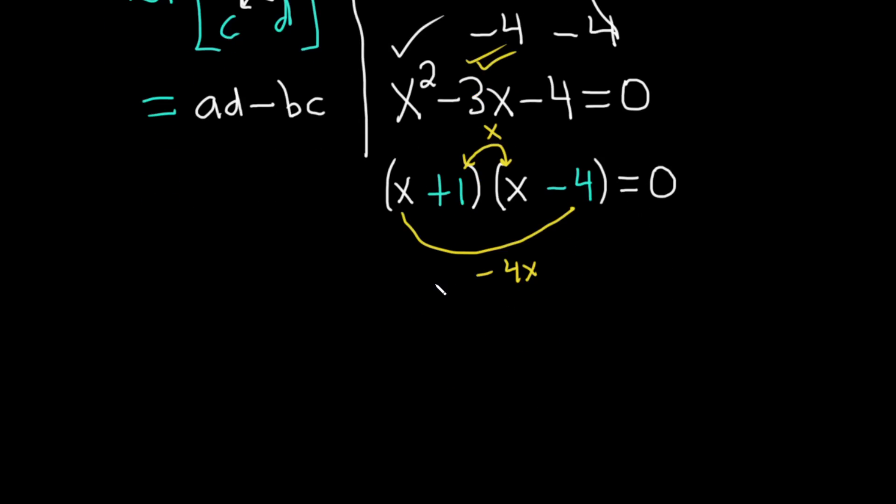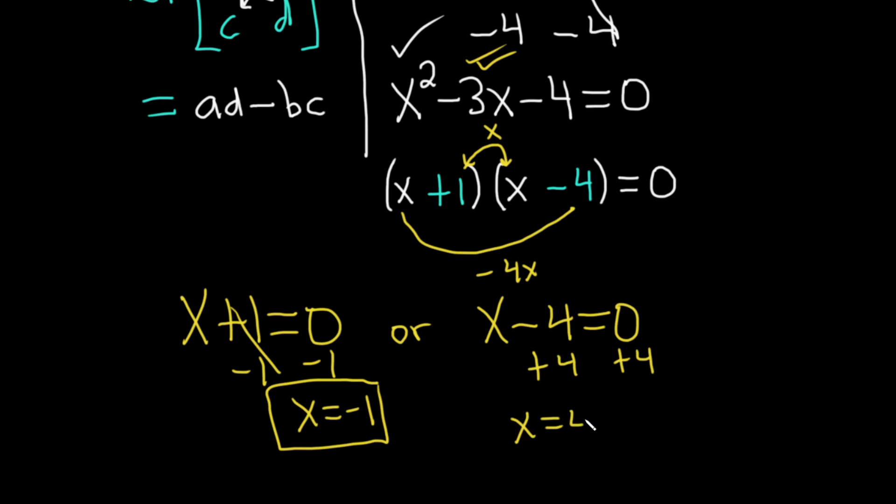Because we have a product and it's equal to 0, we can set each factor equal to 0. So x plus 1 equals 0, or x minus 4 equals 0. This one's easy to solve - we're adding 1, so we subtract 1, so x equals minus 1. Over here, we're subtracting 4, so we add 4 to both sides, so x is equal to 4.